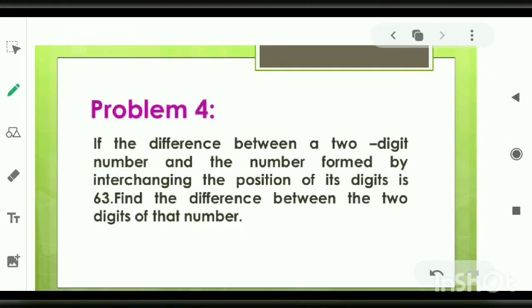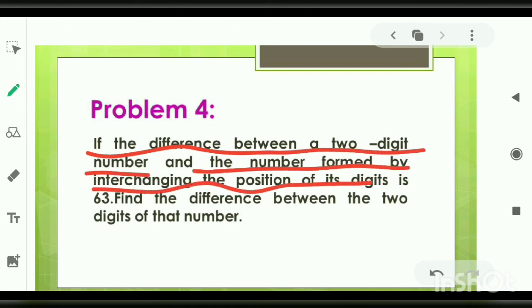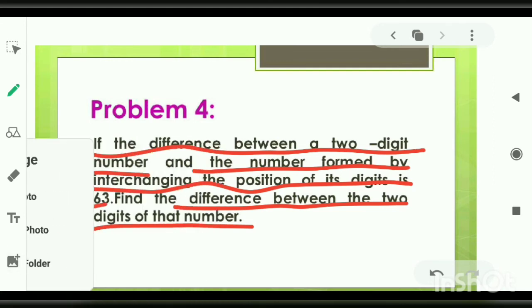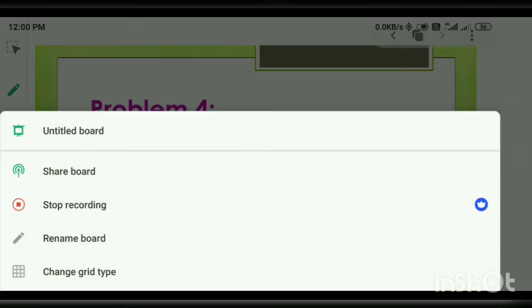Let's read the very last question of the session. If the difference between a two-digit number and the number formed by interchanging the position of its digit is 63, then find the difference between the two digits of that number.